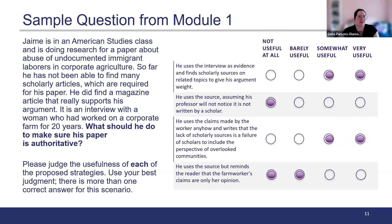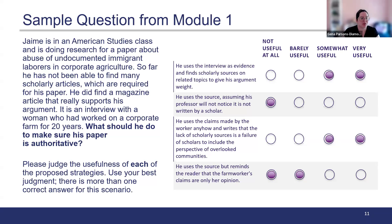Here we have a sample question from Module 1. The instructions are: please judge the usefulness of each of the proposed strategies — use your best judgment, there is more than one correct answer. Jamie is in an American studies class and is doing research for a paper about abuse of undocumented immigrant laborers in corporate agriculture. He has not found many scholarly articles but did find a magazine article with an interview from a woman who worked on a corporate farm for 20 years. Options one and three are marked as very useful, while options two and four are less useful.